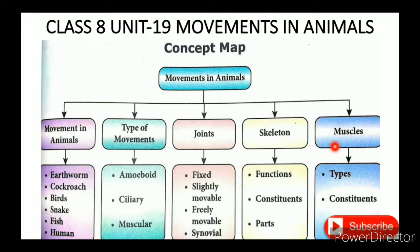In the concept map on movements in animals, there are six topics. The first topic is movement and locomotion. The two words — movement and locomotion — are related: the movement of a body part is known as movement, while the movement of animals is similar to the movement of the human body.